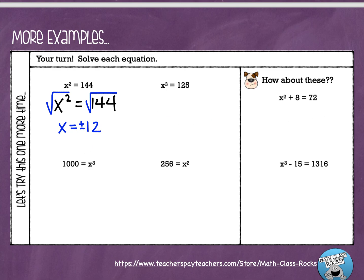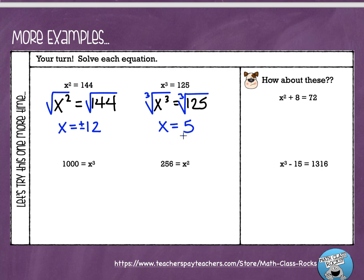Next: x cubed equals 125. The opposite of cubing a number is finding the cube root. Finding the cube root on both sides gives x equals 5, because 5 times 5 times 5 is 125. In this case, the negative won't work — negative 5 cubed gives negative 125, not positive 125. So there is just one solution: x equals 5.